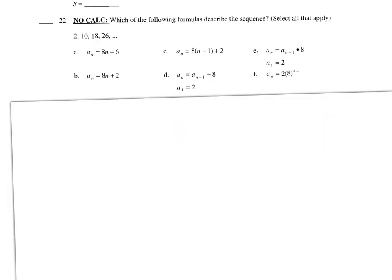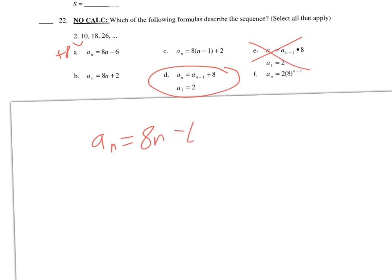Next, which formulas describe the sequence? The pattern is plus 8. The correct recursive is a sub n equals the previous term plus 8; the one multiplying by 8 is wrong. For the explicit formula: 8n as the common difference and a sub 0 equals negative 6, which matches one option. Option b is wrong, and option f is wrong since it's exponential. For option c, distributing gives 8n minus 8 plus 2, which simplifies to 8n minus 6 — so option c is also correct.